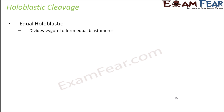Now let us discuss holoblastic cleavage in more detail. In holoblastic cleavage, it can be further divided into two categories. One is equal holoblastic — meaning complete cleavage such that it gives you two equal blastomeres. The zygote is divided completely such that the blastomeres obtained are equal in size. That's called equal holoblastic cleavage.